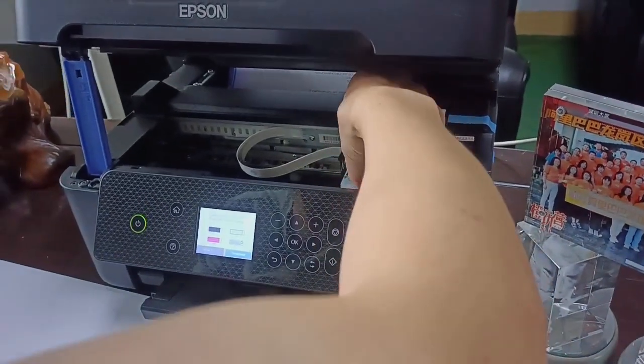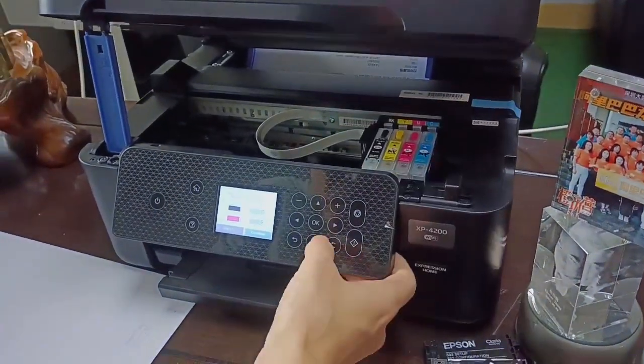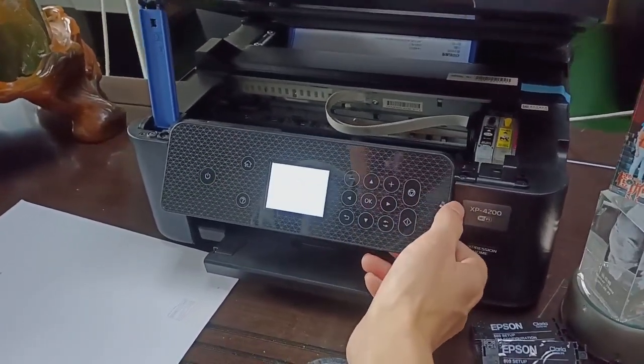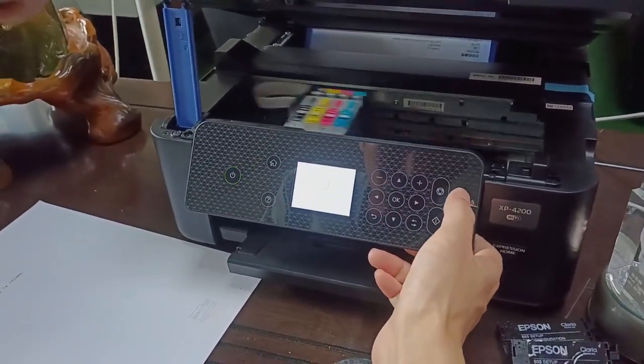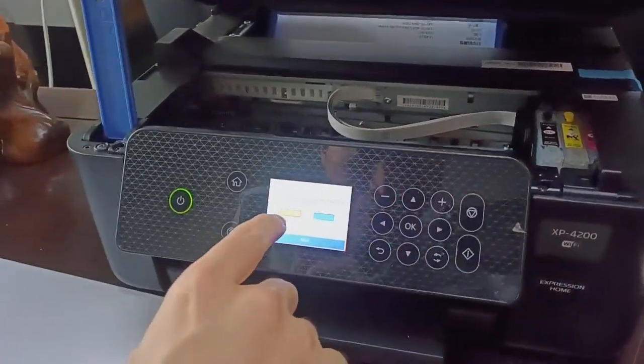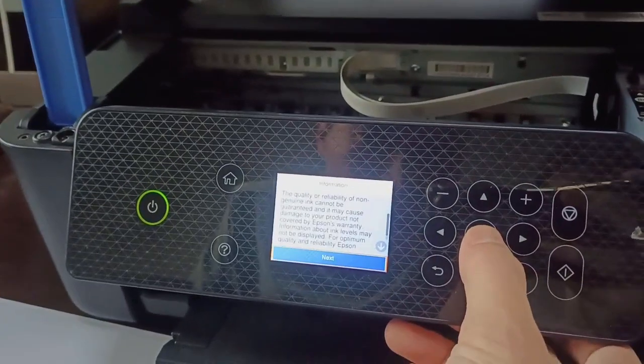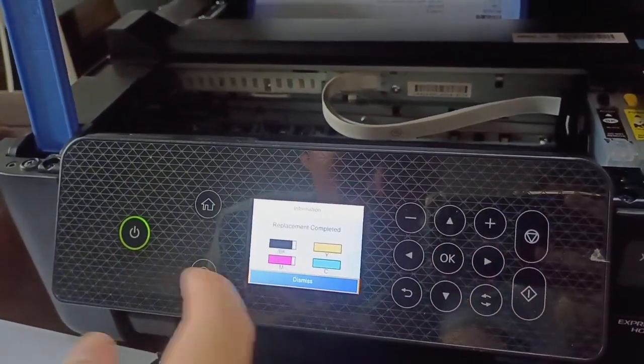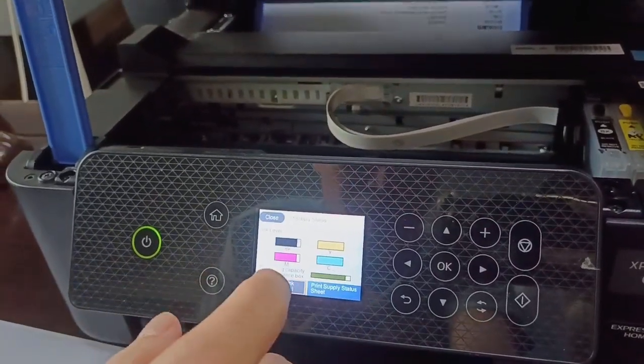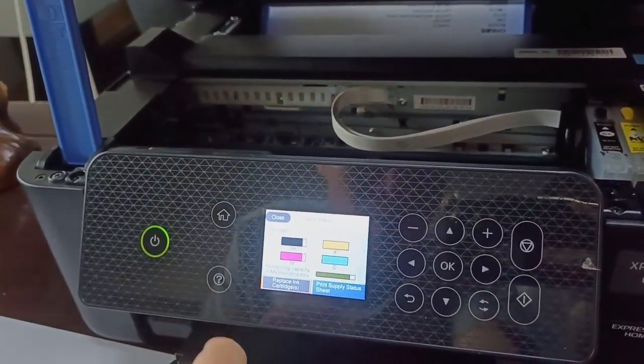So the yellow shows full. This resetter doesn't reset when ink level is full, just reset it when ink level is down. That's okay.